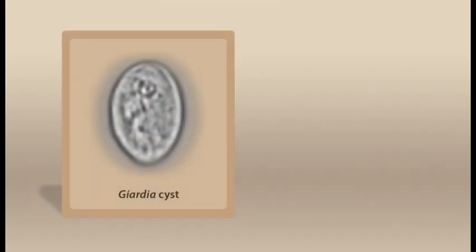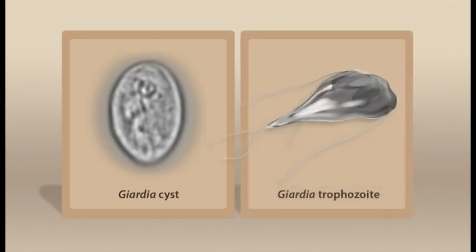This single-celled parasite exists in two forms: a cyst that is highly resistant and can survive well in the environment, and the feeding parasitic stage in which mobile trophozoites inhabit the intestines.